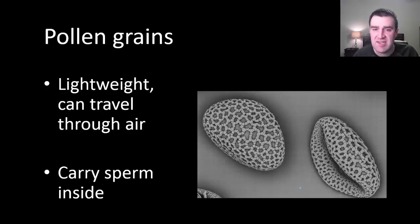Pollen grains contain sperm within them. They're not directly sperm. They're actually a multicellular structure that just contains sperm inside. But they're still lightweight enough to be able to travel through the air quite easily. And so that really is a mechanism for the sperm to travel through the air from member to member of the species.